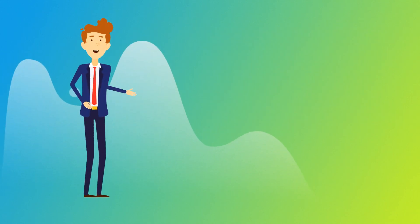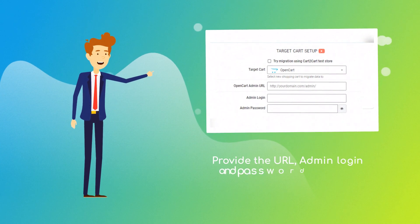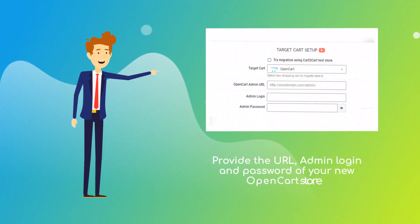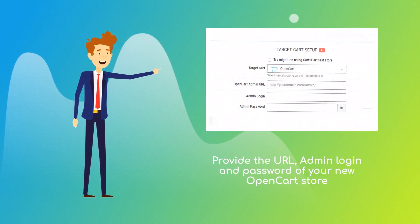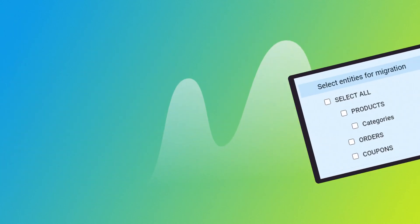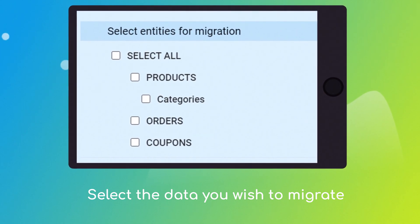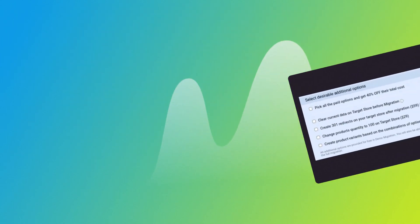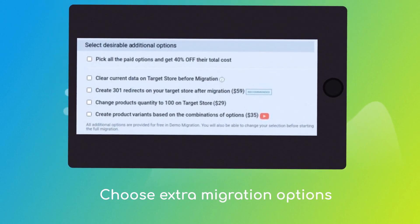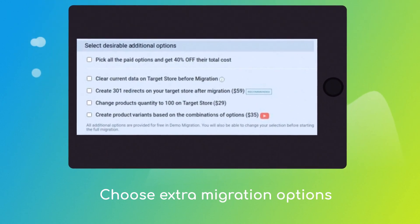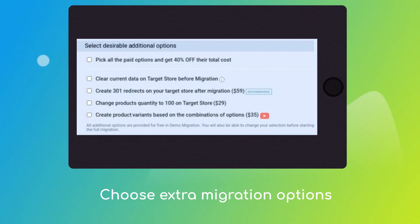Next, provide the URL, admin login, and password of your new OpenCart store. Once done, click the Choose Entities button to select the data types you'd like to migrate to OpenCart, and choose additional options like 301 redirects on the target store, migrate images from the descriptions, or preserve order IDs, etc.